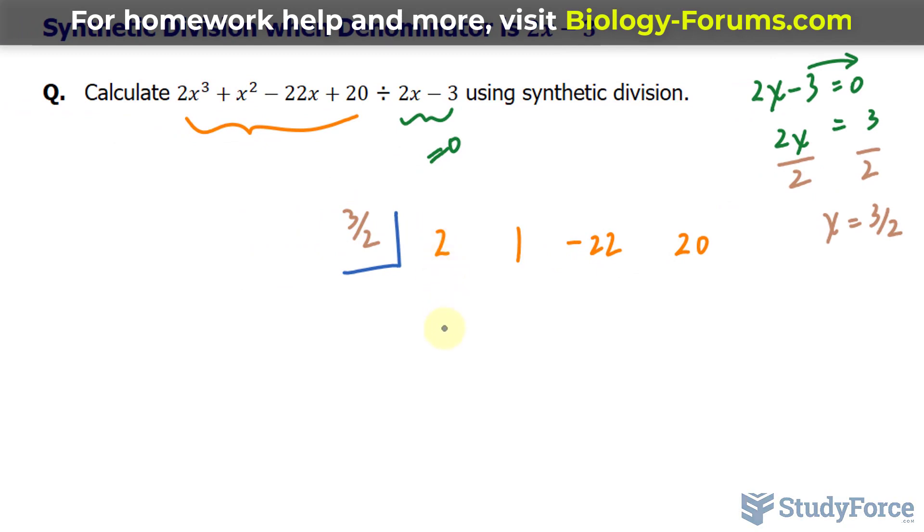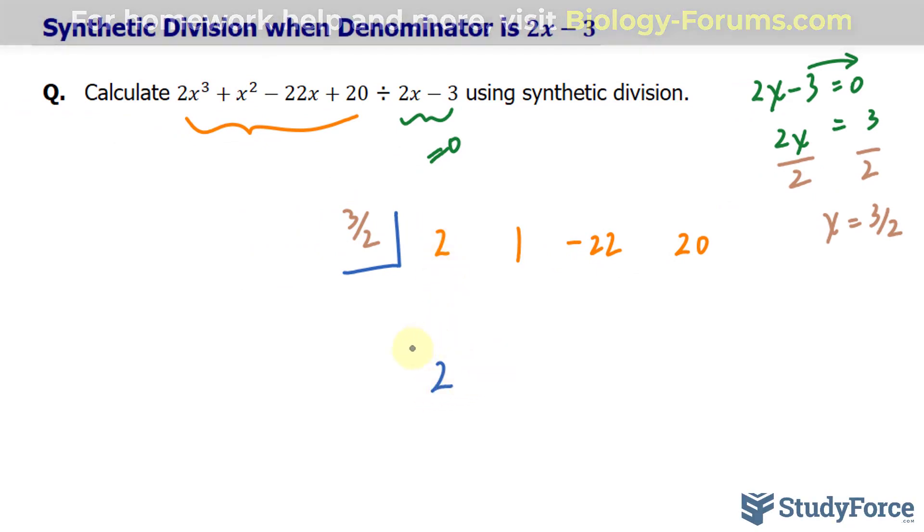Notice the leading coefficient is 2. We will rewrite that underneath, and we'll take this value of 3 over 2 and multiply it to this 2. 3 over 2 times 2 makes 3, and we'll place that value underneath this 1. Now, we will add 1 plus 3, that makes 4.